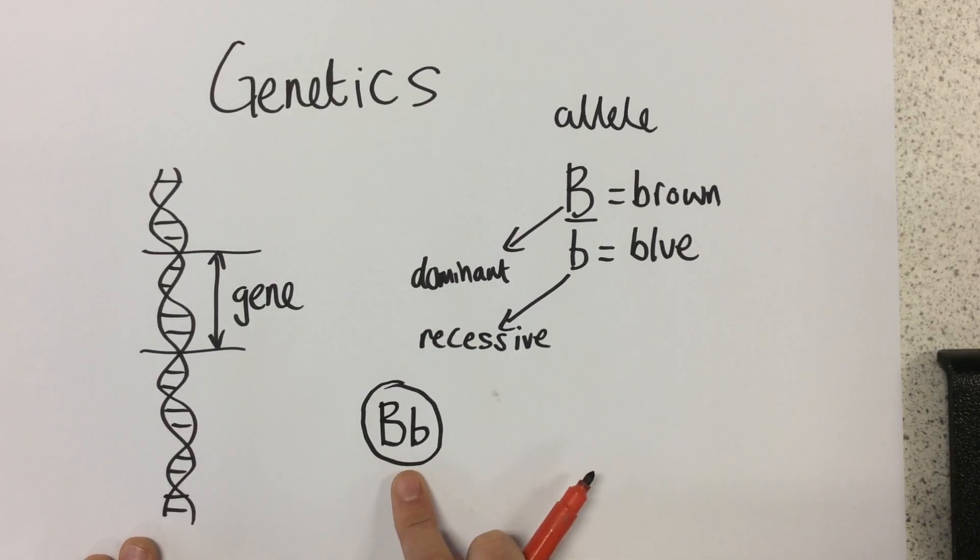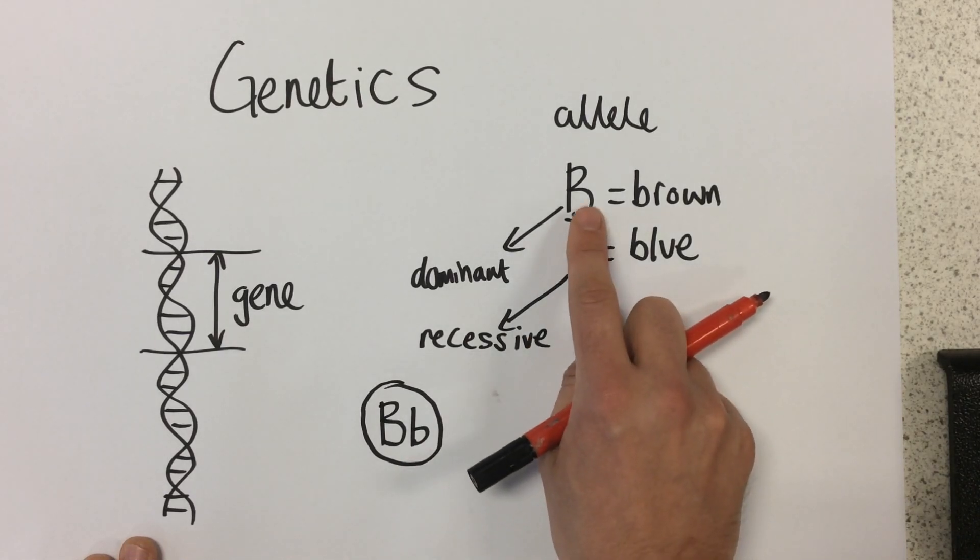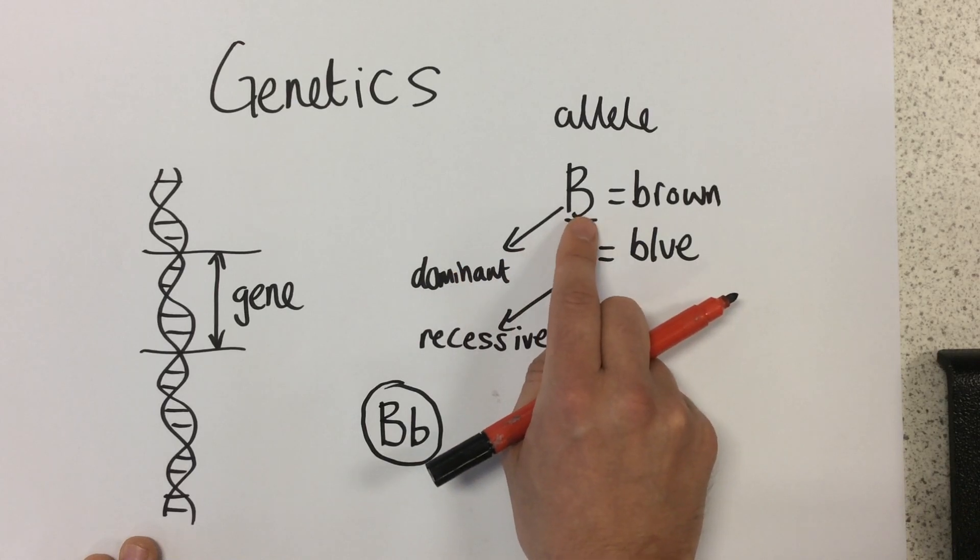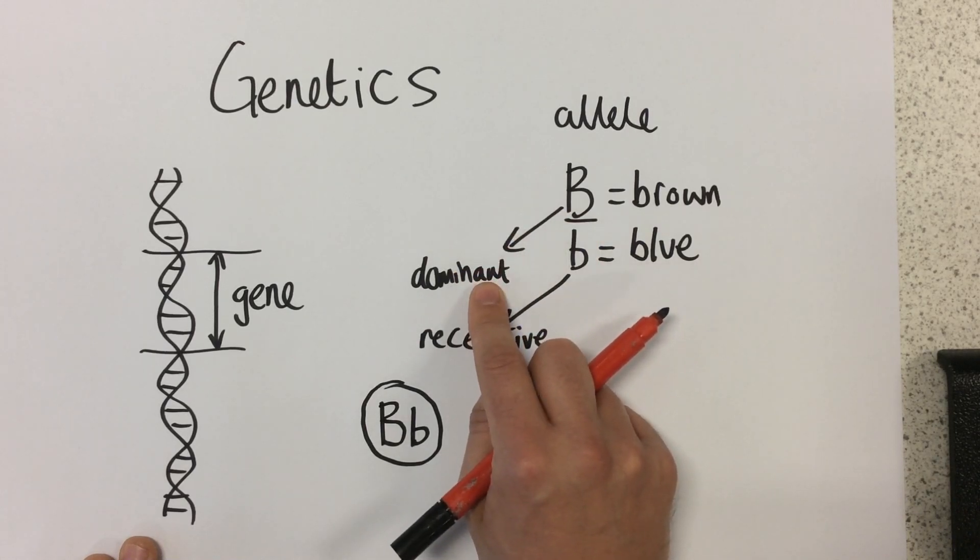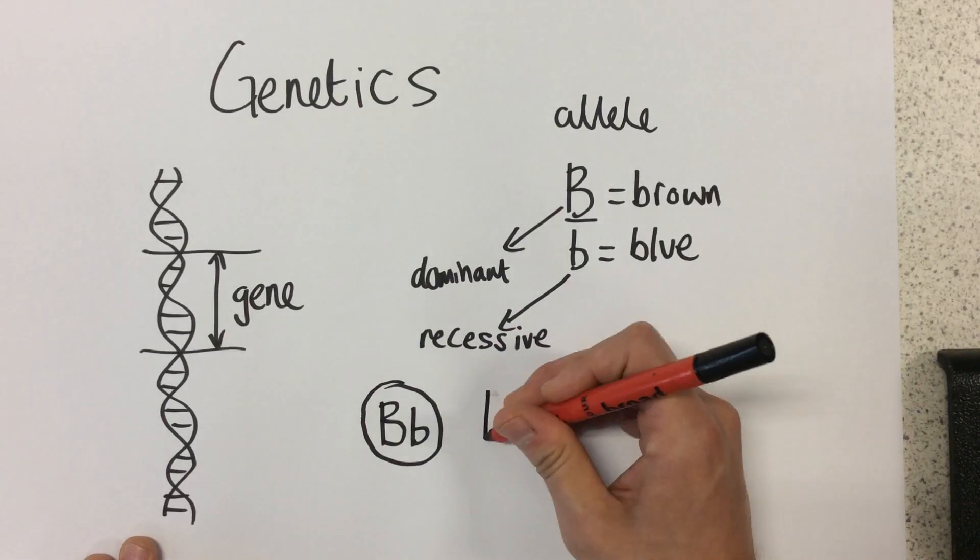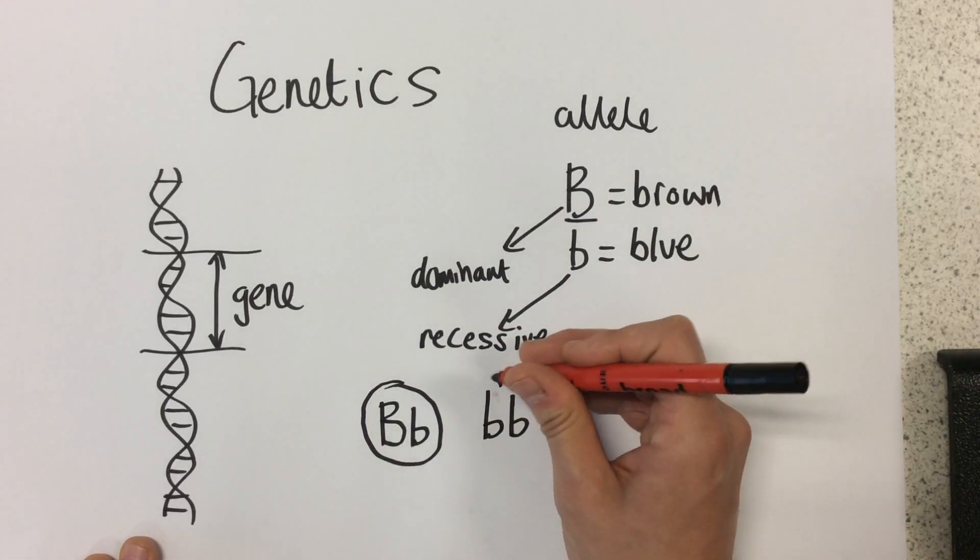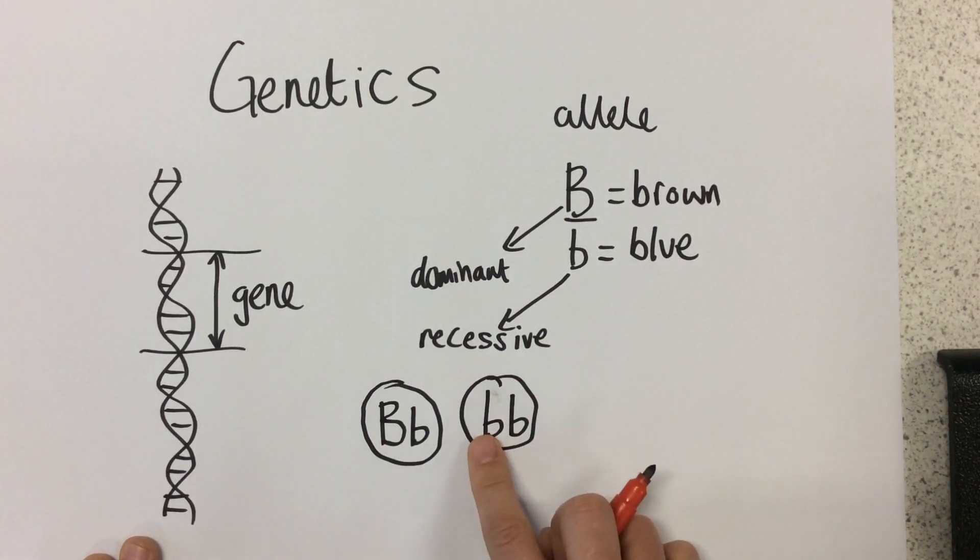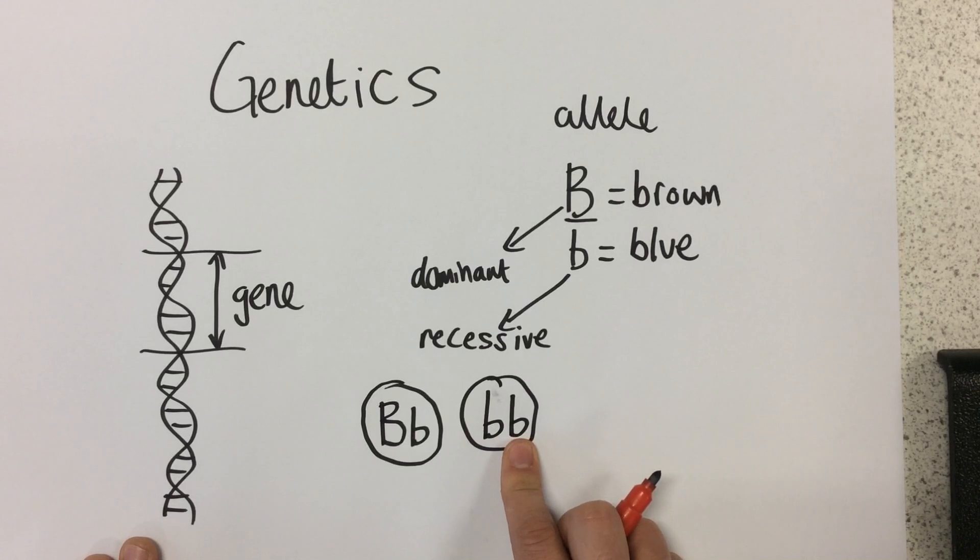This person here would have brown eyes because this allele here is dominant, which means this person would have brown eyes. However, if this person had this genotype, type of genes, this person would have blue eyes because they have two recessive alleles, meaning they have blue eyes.